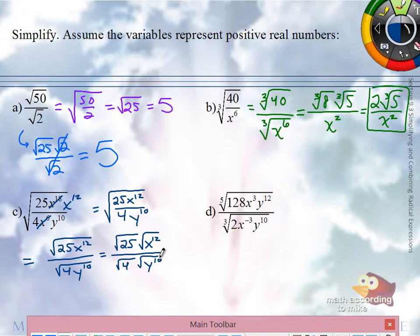And everything in there is a perfect square, so what square root is 25? x to the 12th, x to the 6th, 4, y to the 10th.